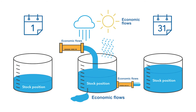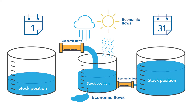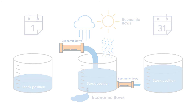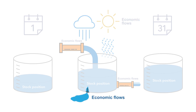When both economic flows and stock positions are recorded in macroeconomic statistics, they are explicitly or implicitly integrated. In this sense, the changes in the stock positions between the two periods can be fully explained by the economic flows that are recorded between those two periods. With our dam filled with water analogy, the change in the level of water in the dam from the beginning to the end of the year can be fully explained by the water that flowed in and out of the pipes, as well as the rain and evaporation, and the leaking through a crack in the wall of the dam.